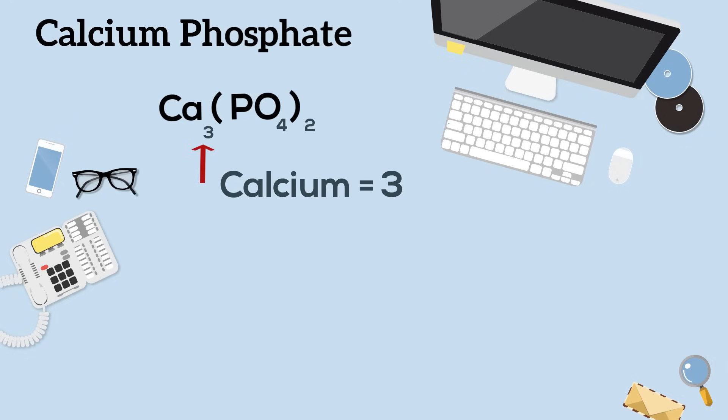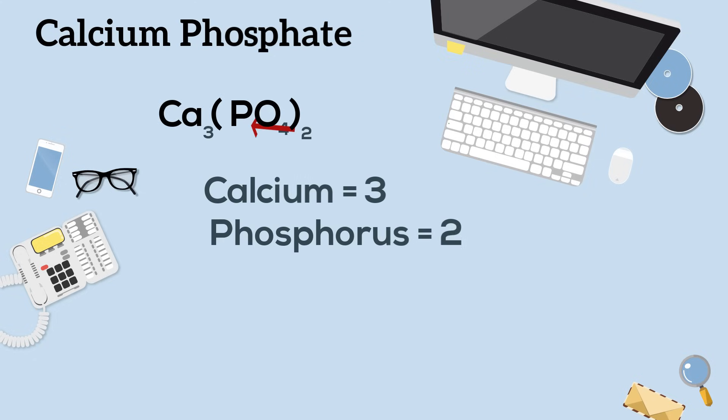Then, with a parenthesis, we multiply the subscript of two on the outside. So that will be two times one for phosphorous and two times four for oxygen. And that gives you a total of 13 atoms. This helps.